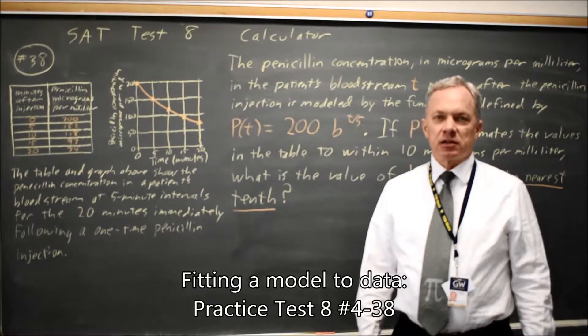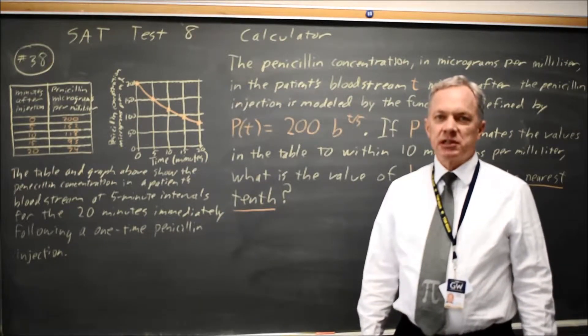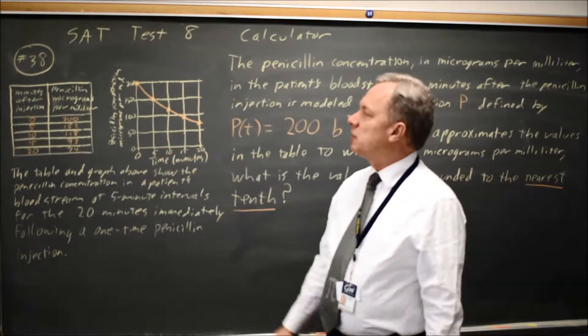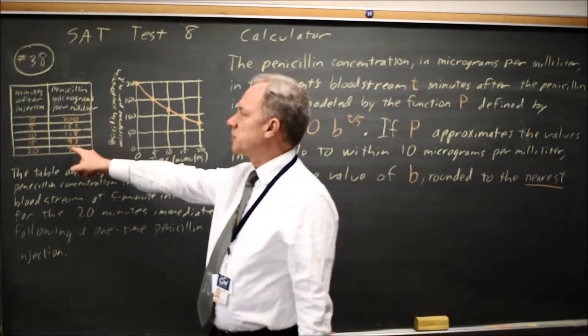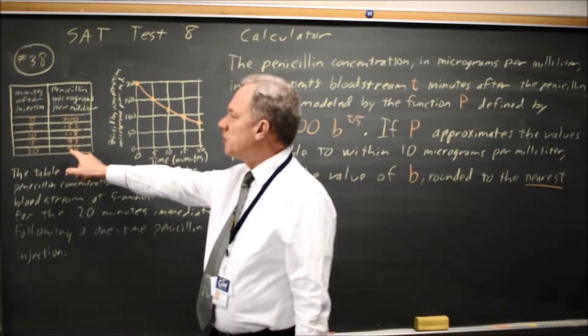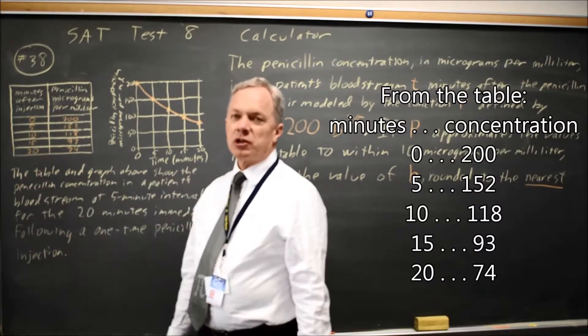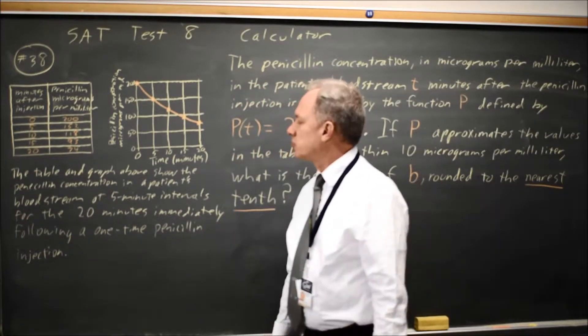This is SAT Test 8, calculator question number 38. College Board has given us a table of data and a corresponding graph for the penicillin concentrations in the bloodstream in micrograms per milliliter 0, 5, 10, 15, and 20 minutes after a penicillin injection for a patient.